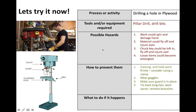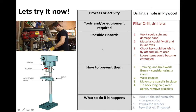How do you prevent it? To prevent the work spinning, the person needs to be trained and shown how to hold the work firmly — and if applicable, consider using a clamp. Number two could be prevented by wearing goggles. Number three by making sure the guard is in place and being used. Number four by instructing people to tie back long hair, wear an apron, and remove bracelets. And if any of that actually happens, turn off the drill using the emergency stop, inform your teacher, and seek first aid if required.